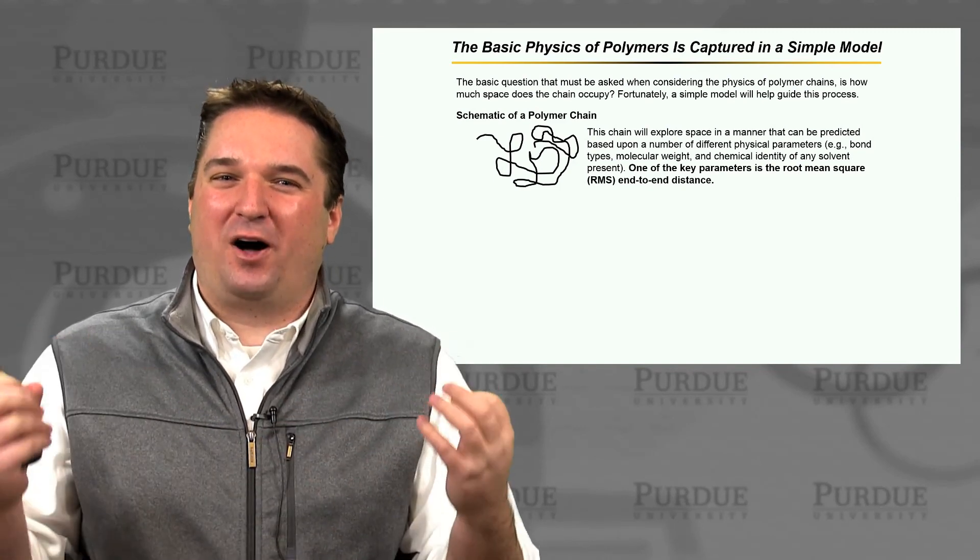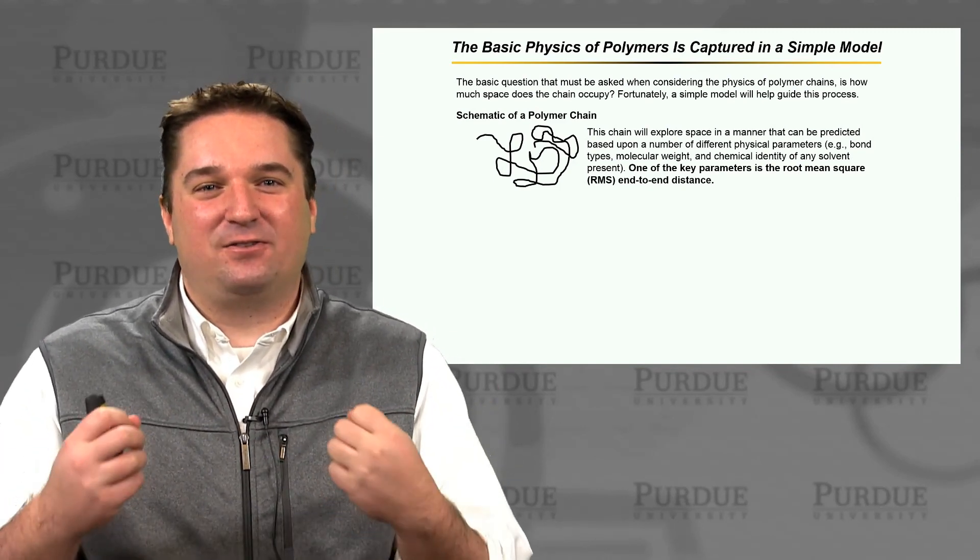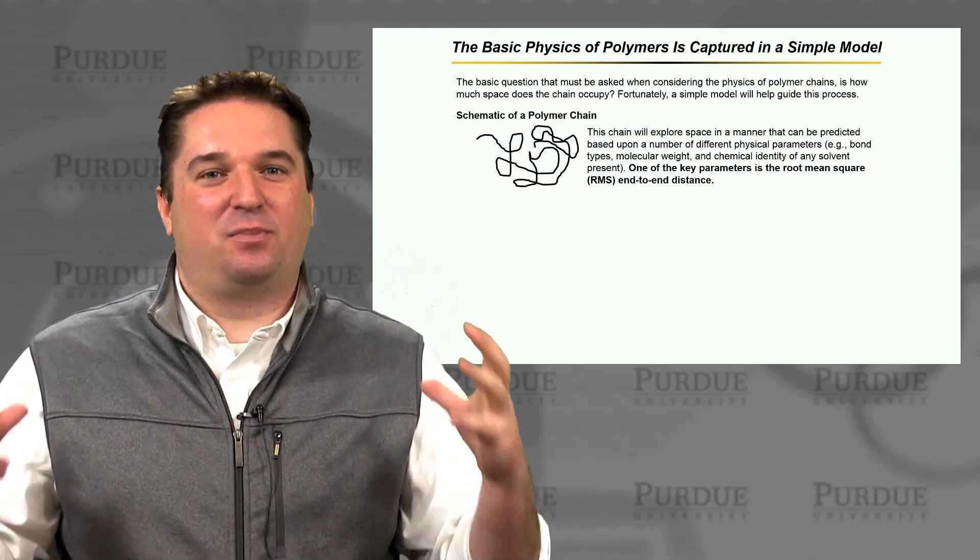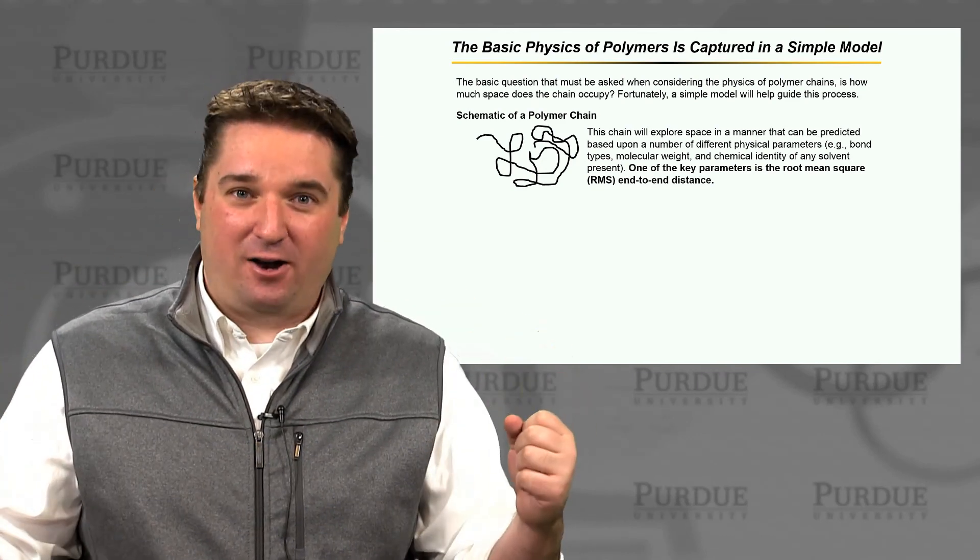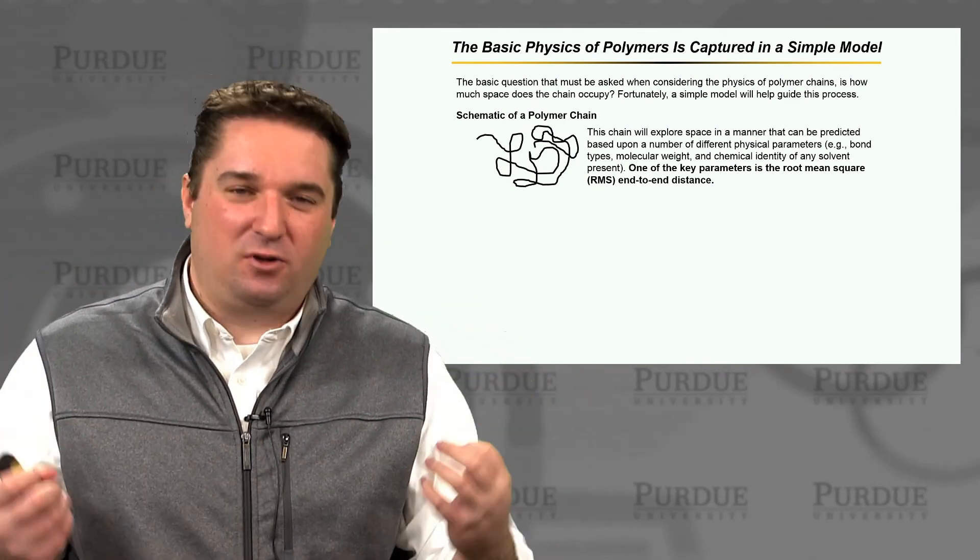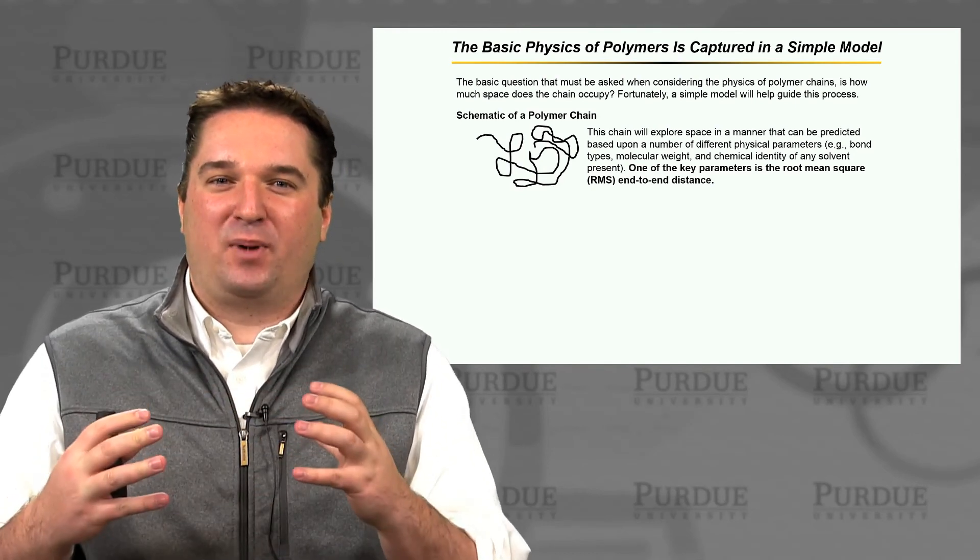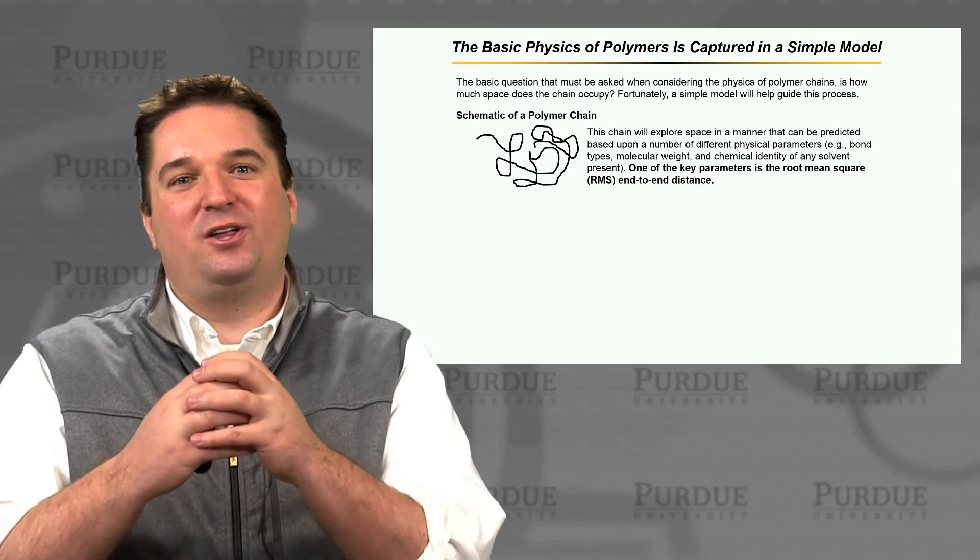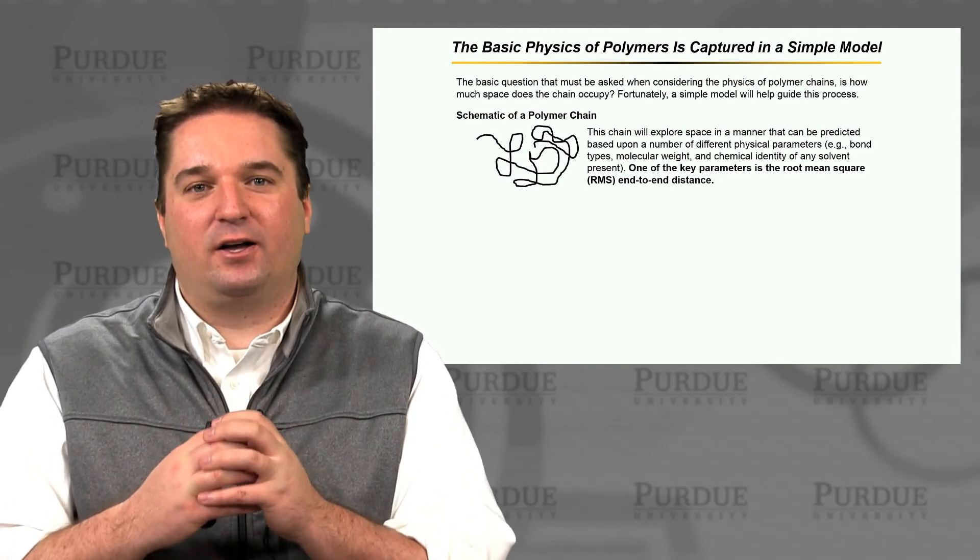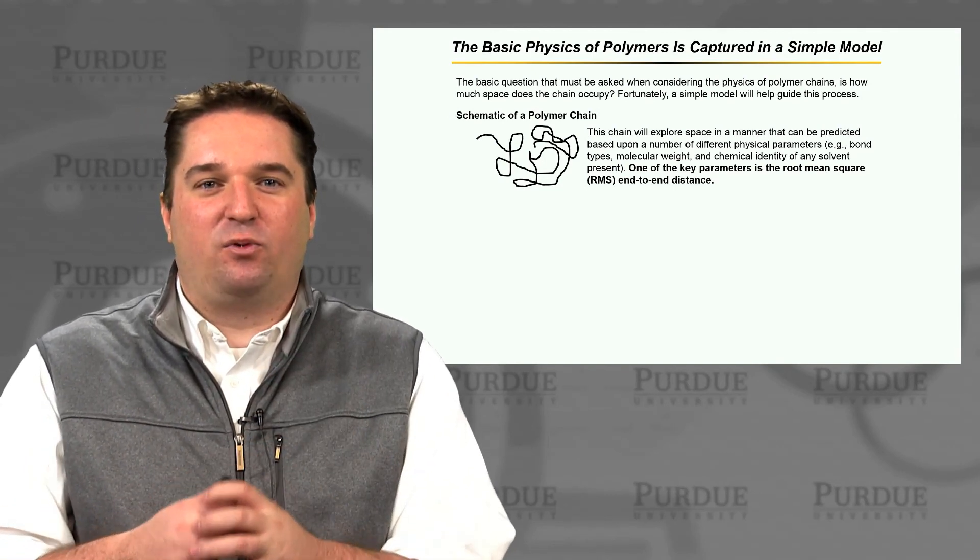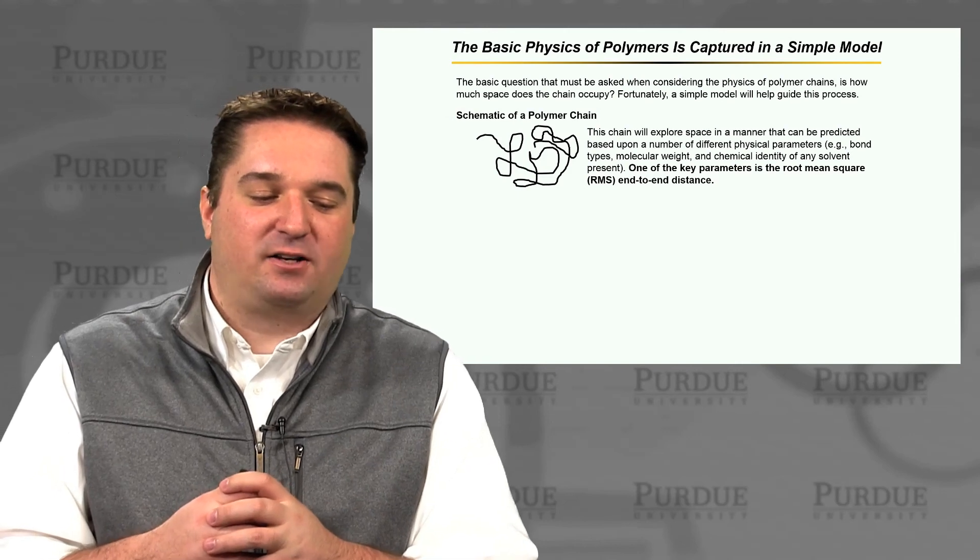How much space will a polymer with a given number of repeat units, a given molecular weight, occupy? This will depend a lot on the chemistry, on the molecular weight. But we need to think about how these things look from a very basic standpoint, and then we'll be able to pull it into more realistic standpoints as we move into electronically active polymers.